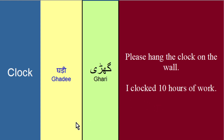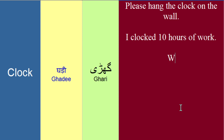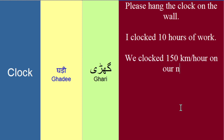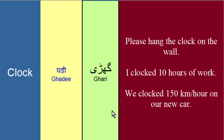Meinne 10 ghantay kaam kiya — 'I clocked 10 hours of work.' Issi tarah keh sakta hoon: 'We clocked 150 km per hour on our new car' — ke humne apne nayi gaadi ko 150 km per hour tak chalaya. We clocked 150 km per hour on our new car — ke humne apne nayi gaadi peh jo sab se high speed ko register kiya, note kiya, wo thi 150 km per hour.